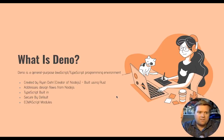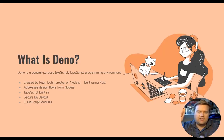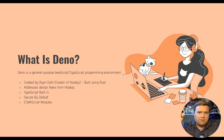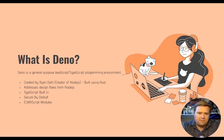So what is Deno? Deno is a general purpose JavaScript TypeScript programming environment. It's created by Ryan Dahl, who created Node.js, and it's built using Rust. There was actually an article that Ryan Dahl created a few years ago about some problems he had with Node.js, some things that had blown up about it that he wasn't happy about, and especially with NPM, the package manager. And I think Deno kind of came out because of that.